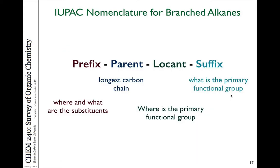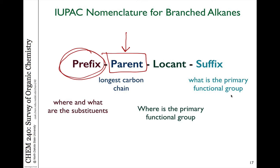Every IUPAC named molecule has essentially four different parts. The main part is the parent — that is the main chain of carbons or the longest chain of carbons that we can identify in the molecule. So the parent is going to be the main name. For example, if a five-carbon chain that's linear is the longest part of the molecule, the parent would be pentane. We also have substituents which can be branched off of them, and that would be where we would put in the prefix.